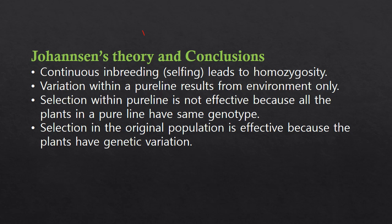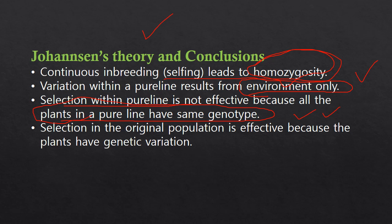After the experiment, Johannsen concluded a few things. First, continuous breeding — that is, selfing — always leads to homozygosity. Second, variation within a pure line results from the environment only; it is never due to the genotype. Third, selection within a pure line is not effective because all the plants in a pure line have the same genotype.